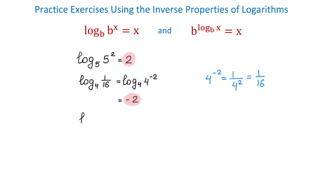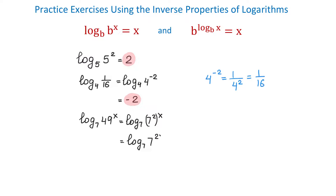In the next example, we will evaluate log base 7 of 49 to the x power. These bases are not the same, but we can write 49 as 7 squared. Then we will have log base 7 of 7 squared, all to the x power. Here we will use the power rule for exponents and multiply 2 and x, giving us log base 7 of 7 to the power of 2x. Now, since these two bases are the same, the value of the logarithm will be 2x.